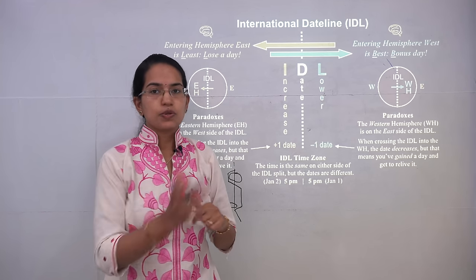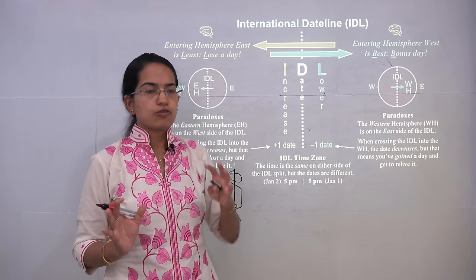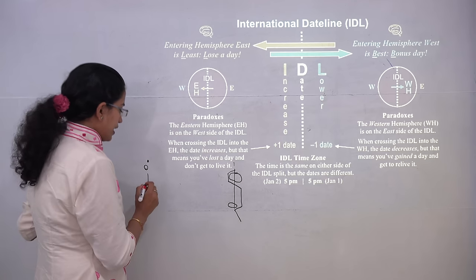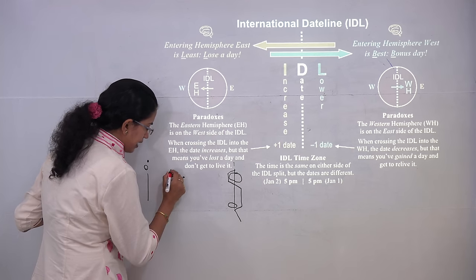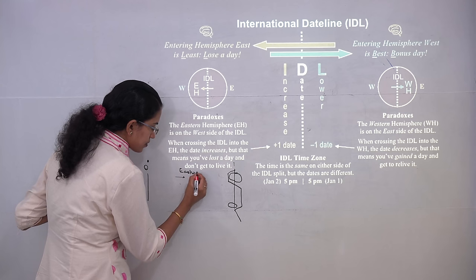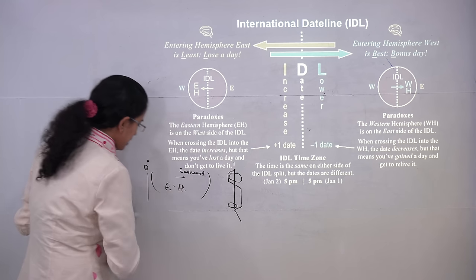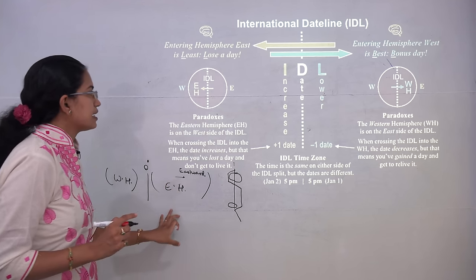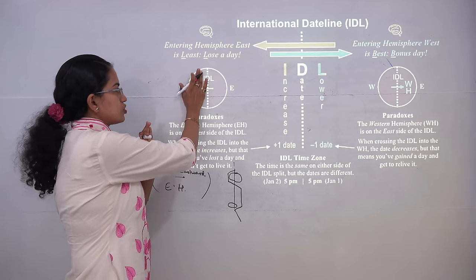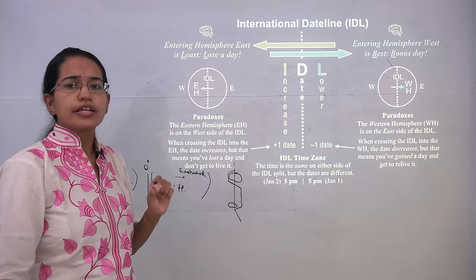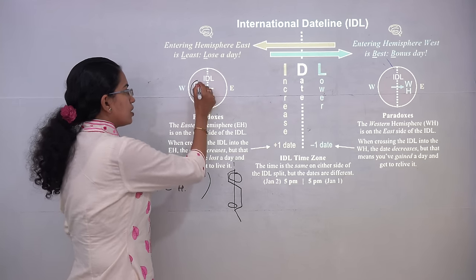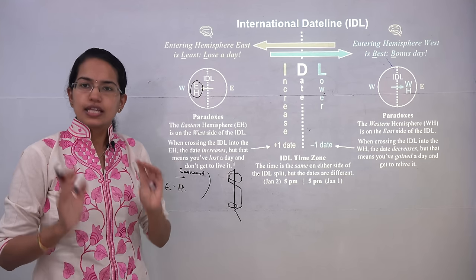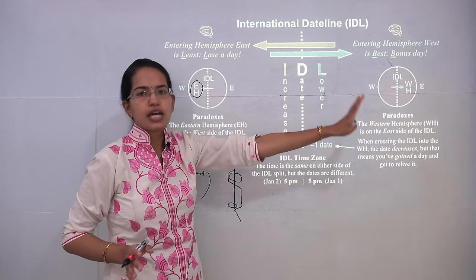Around the 1500s, Magellan went to explore the world, and around the 1800s the concept of the International Date Line emerged. The Greenwich Meridian is at 0 degrees. Moving towards India, which is east of Greenwich, that side is the eastern hemisphere; the portion beyond the International Date Line is the western hemisphere. When drawn on a map, the eastern hemisphere appears on the western side of the map — this is the major paradox of the International Date Line. Eastern hemisphere is on the west side of the IDL, and western hemisphere is on the east side.